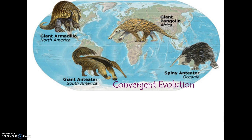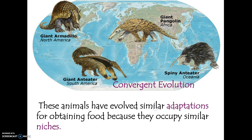Here's another example of convergent evolution — different organisms facing similar pressures in similar environments that end up with similar features through mutations and natural selection. The anteater, the pangolin, and the armadillo share some similar features, but in this case evidence does not support that they came from a common ancestor.